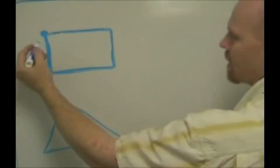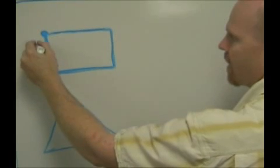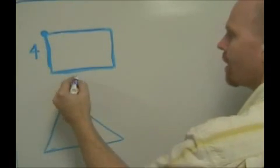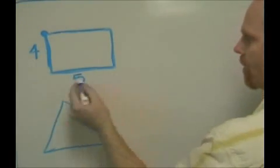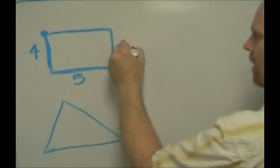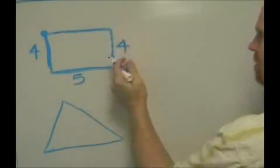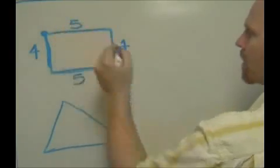And let's pretend this has a height of four units. This has a width of five units, and since it's a rectangle, the height will also be four again, and the width up here is also five.